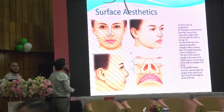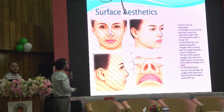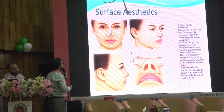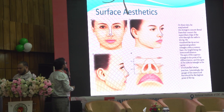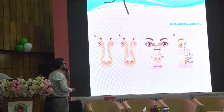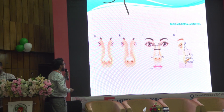Regarding surface aesthetics, we assess the whole face before rhinoplasty. The dorsal aesthetic line is drawn from the superciliary arch along the radix area up to the dome-defining point on both right and left sides. The alar width should equal the intercanthal distance, and the dorsal width should be 80% of the alar width.